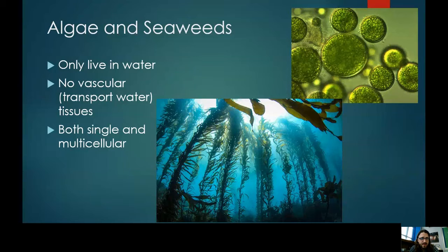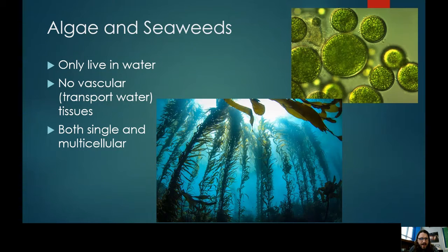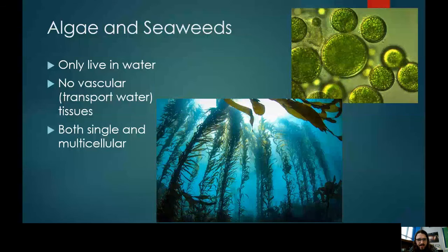Algae don't have vascular tissue. They might look like they have stems, but those stems are not the same as a tree's. There is no flow of water through algae because they live in the water — they don't have a root system to pump water to their leaves, so the entire plant has to be submerged. Seaweeds are multicellular; kelp is a good example, and the green wrap around sushi rice is seaweed.